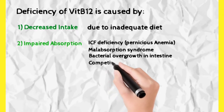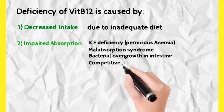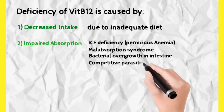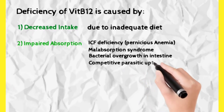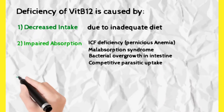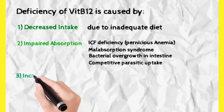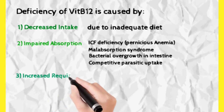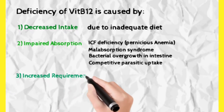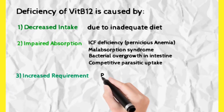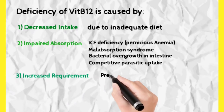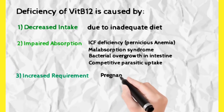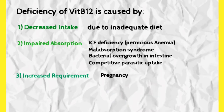The third cause is increased requirement, which usually occurs in females during pregnancy and infancy. During pregnancy, almost everything required doubles, as nutrients are utilized for both the mother and the growing fetus. This is the reason why supplements — vitamin B12, iron, and almost every supplement — are given during pregnancy and also during infancy.